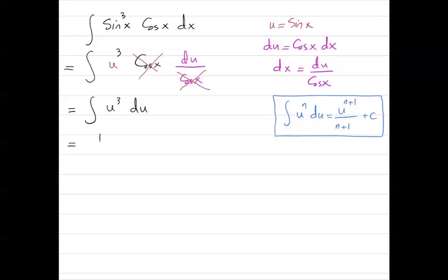We are not done yet, we have to substitute u back. We get 1 fourth sine x to power 4 plus c, or you can simplify that as 1 fourth sine to power 4 x plus c.